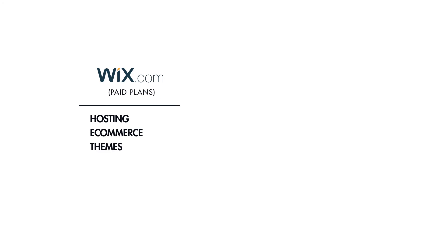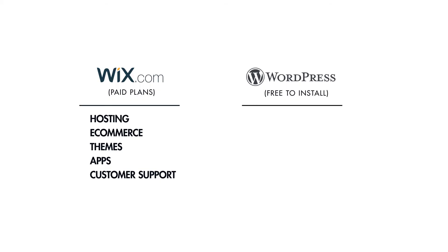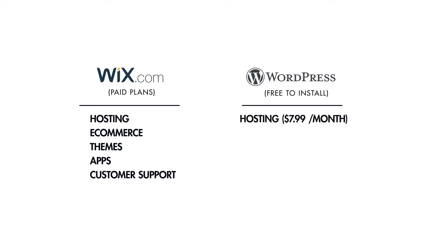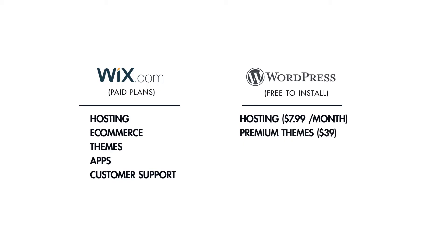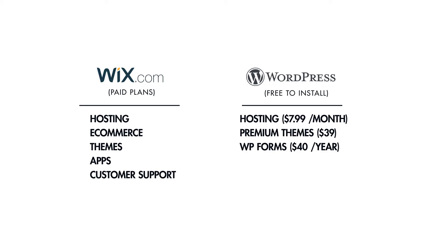It's a bit hard to compare prices between Wix and WordPress because they're priced completely differently. Wix includes everything in one package: hosting, e-commerce, themes, apps, and customer support — all included in every Wix package, though some apps do cost additional money, but most are free. WordPress core is free, but you can pay for hosting, premium themes, and premium plugins. For example, Bluehost charges $7.99 per month for WordPress hosting, and a premium theme from ThemeForest could cost around $39. WPForms, a drag-and-drop WordPress form builder, starts at $40 per year. WooCommerce is a free e-commerce plugin, but it sells extensions costing between $0 and $299 that add specific features — for example, adding a UPS shipping method costs $79.